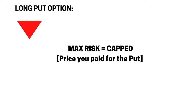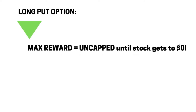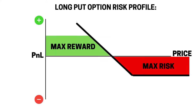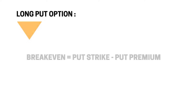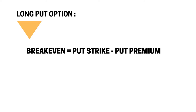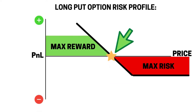Remember: the maximum risk is capped at the price you paid for the put. The upside is unlimited until the price gets to zero. Looking back at the payoff profile, you can clearly see where you lose money — if the price goes up and stays there, the debit, i.e., the cost of the trade, is your maximum risk. The break-even for the long put is the put strike price minus the put premium, and on the risk profile chart you can see the star marking where the price needs to move down through before you start making money.